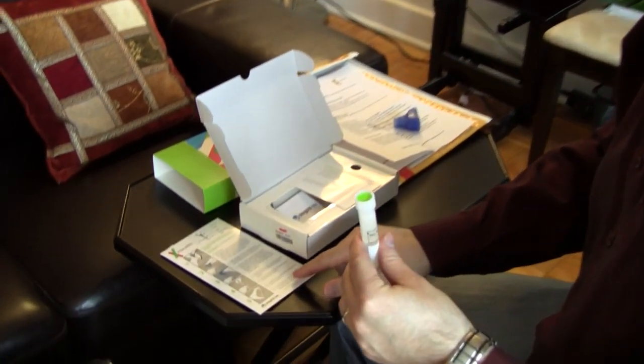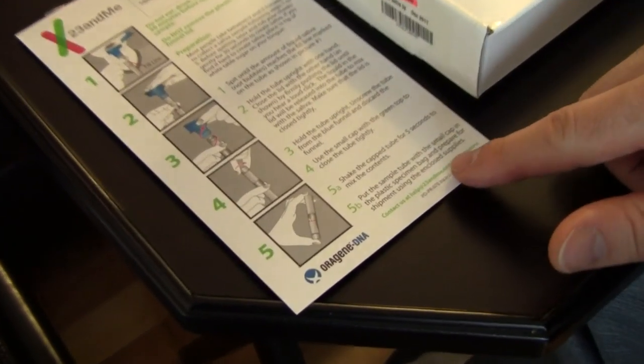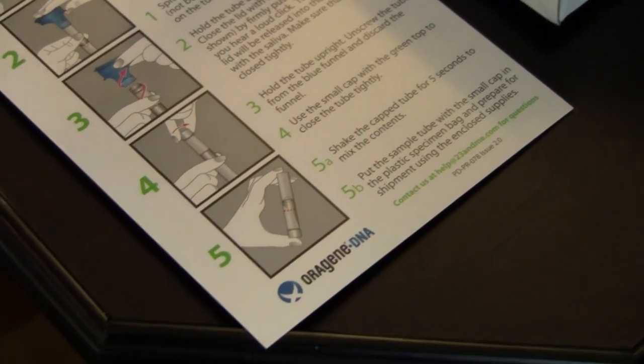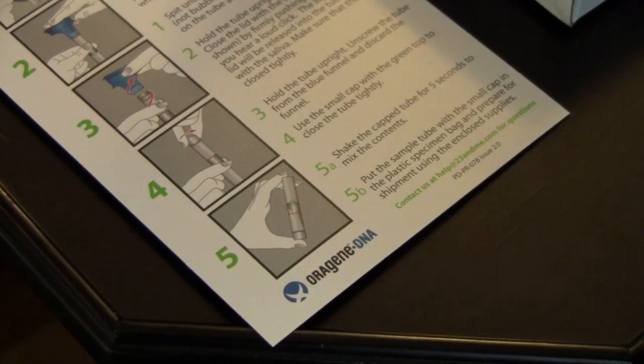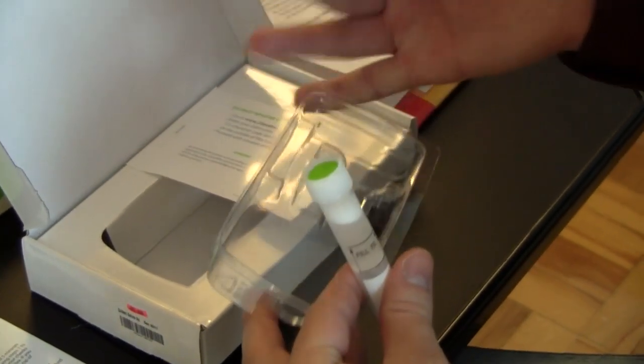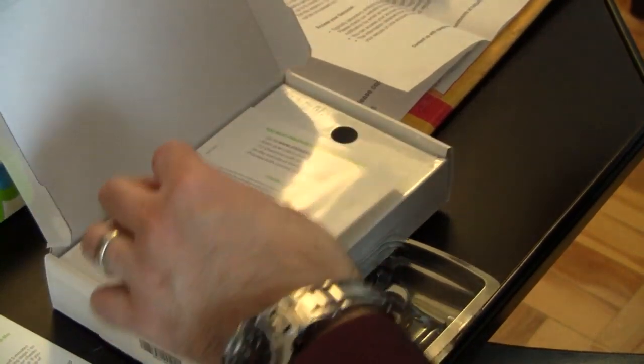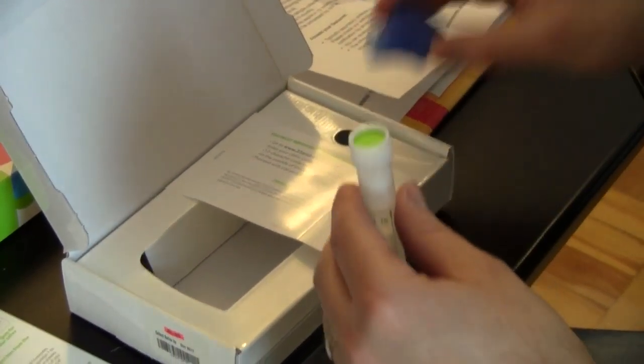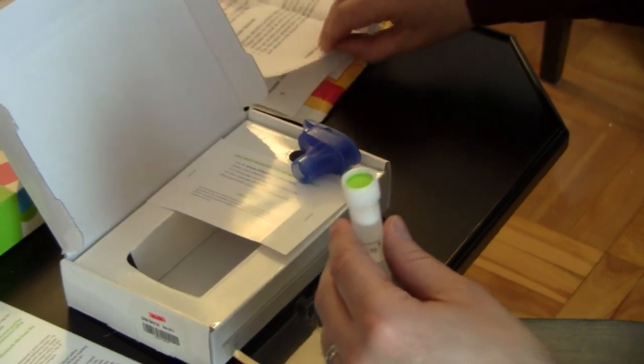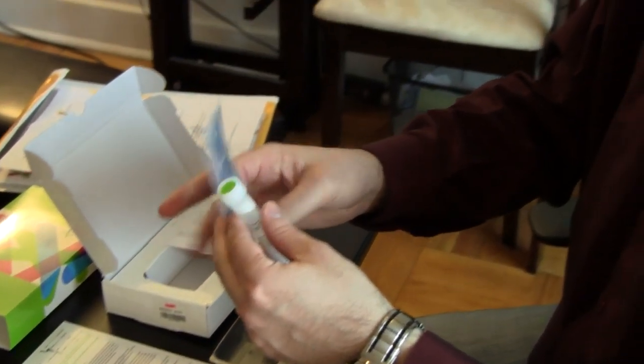And the last step: put the sample tube with the small cap in the plastic specimen bag and prepare for shipment using the enclosed supplies. So I suspect, I would imagine this is the plastic specimen bag. Would that be? No, that's not it. Where is the plastic specimen bag? Here we go, here we go, this is the plastic specimen bag.